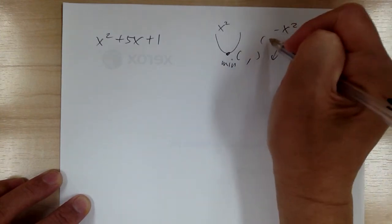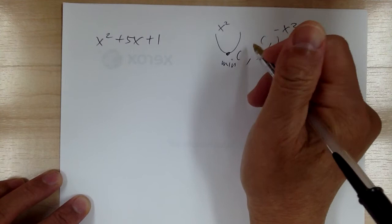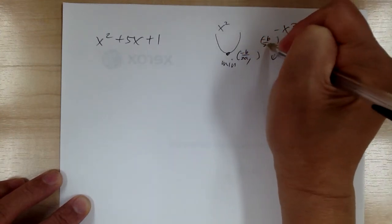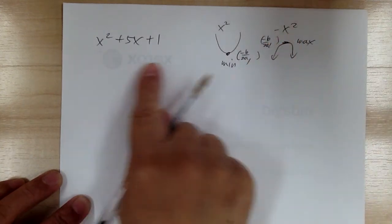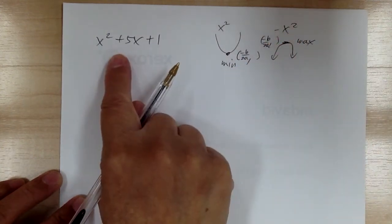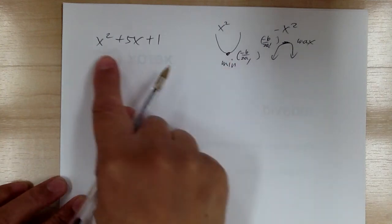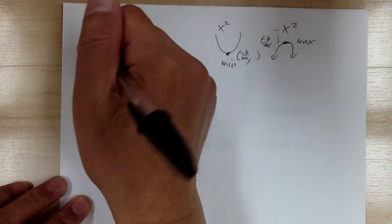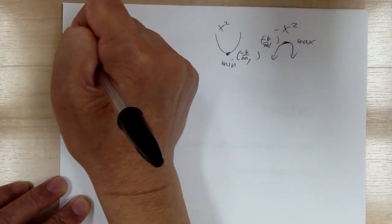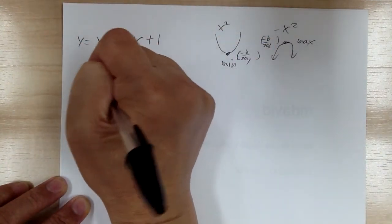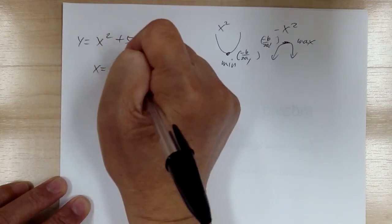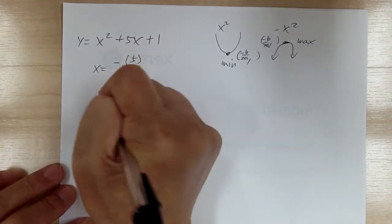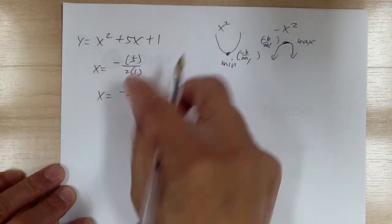The vertex x-coordinate is equal to negative b over 2a. So you use negative b over 2a to find the x-coordinate, then substitute to find y. Here x equals negative 5 over 2.